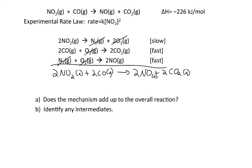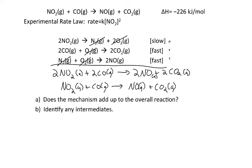You can see that there's a coefficient of two in front of each reactant and product, so I can simplify that. Indeed, when I add up the elementary steps from the reaction mechanism, I do get the correct overall reaction. The intermediates we identified were O2 and N2.